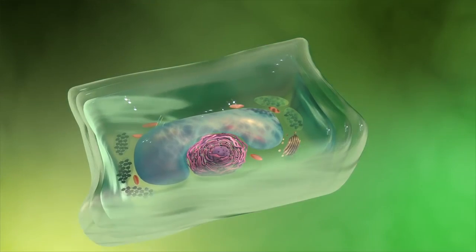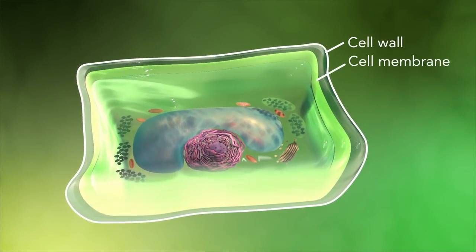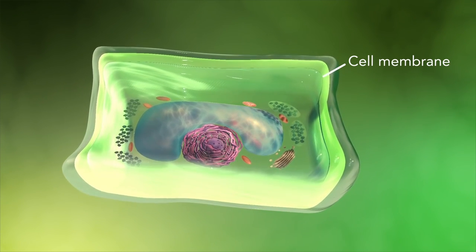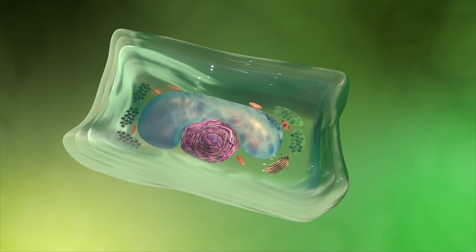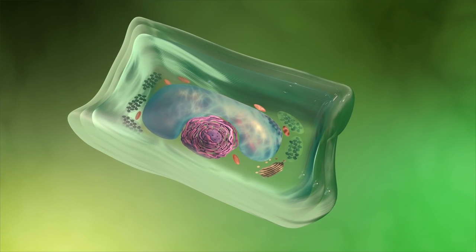Plant cells also have a cell wall outside of their cell membranes that shape, support, and protect the plant cell. Animal cells never have a cell wall.